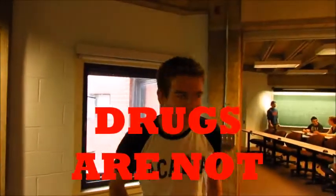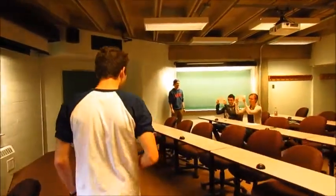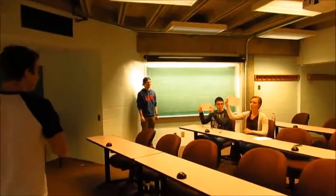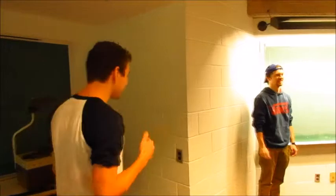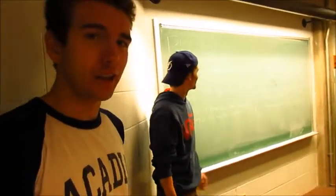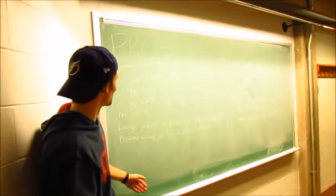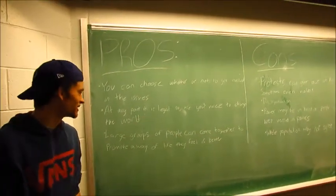Now let's go to a better example of democracy from below. Hey, democracy from below! We're not going to recess until we get chocolate milk. We demand the milk. Free the milk. These guys know what they're doing. Now tell us about the pros and cons of democracy from below. Some of the pros of democracy from below is you can choose whether or not to get involved in the issues.